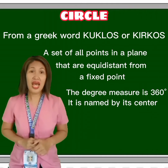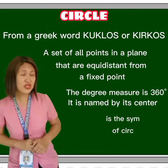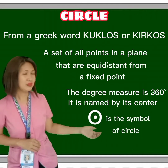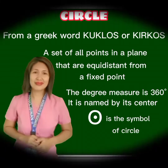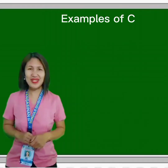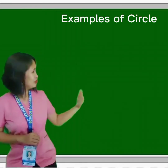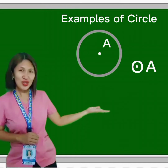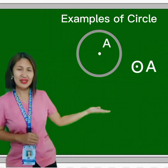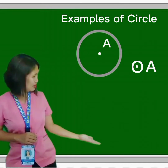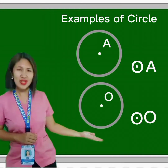A circle is named by its center, and the symbol for circle is shown. For example, this is circle A, and this is circle O.